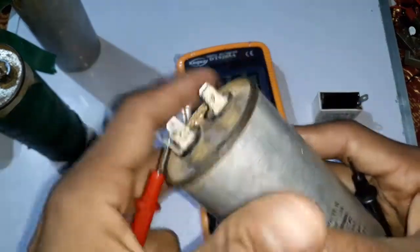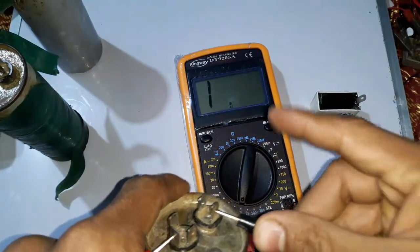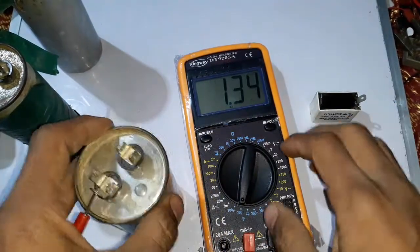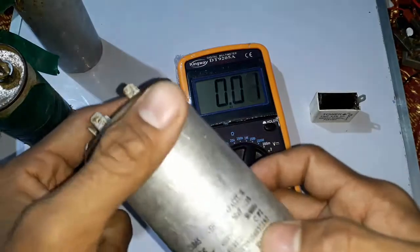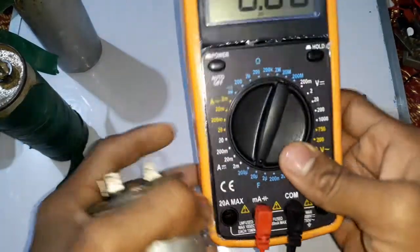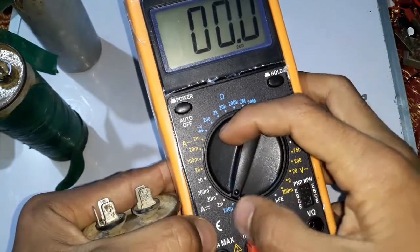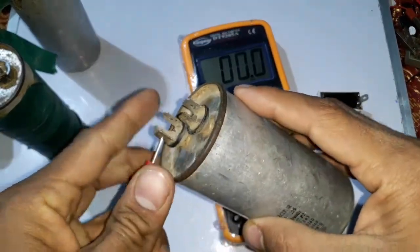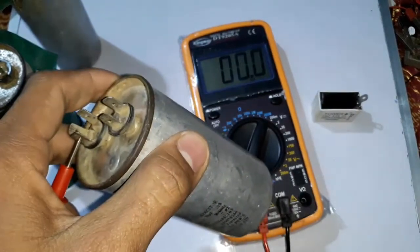If I test this 50 microfarad capacitor and connect directly to this, it won't show any reading and it means that the value of the capacitor is bigger than the testing option. So we will choose the 200 microfarad option and then connect the testing leads.